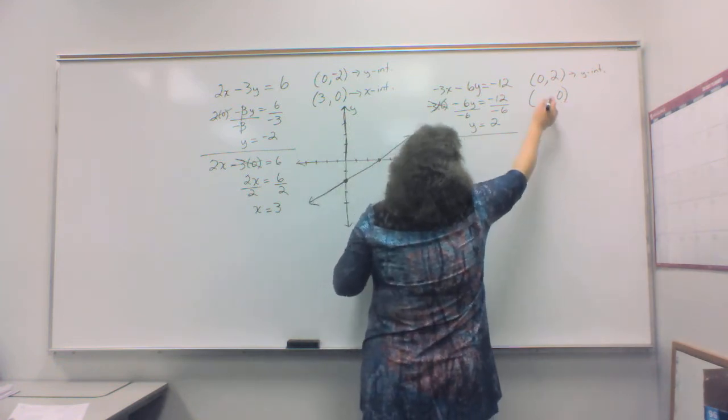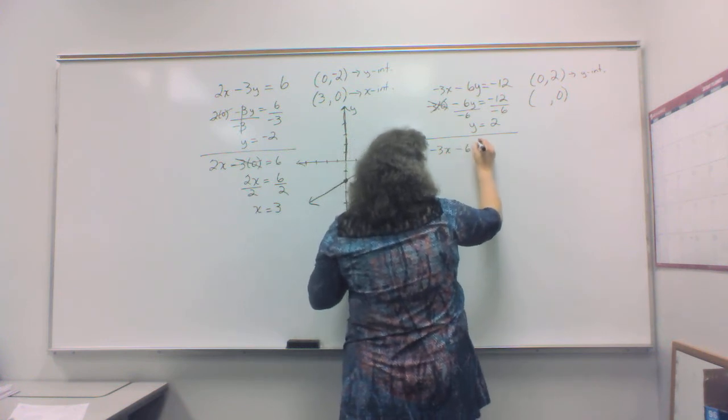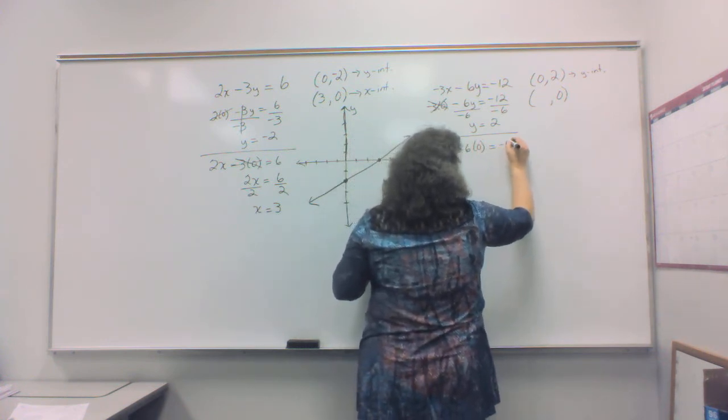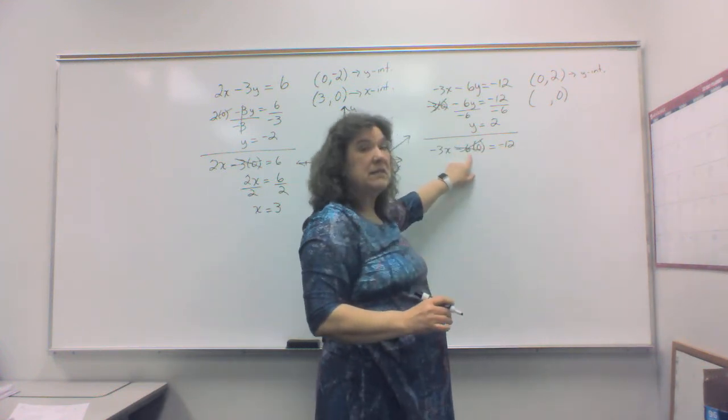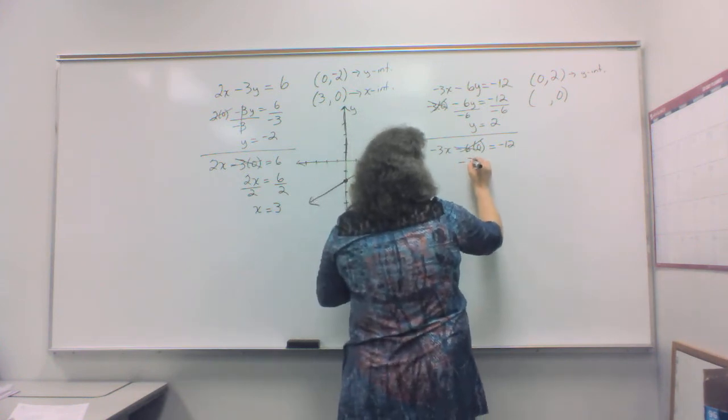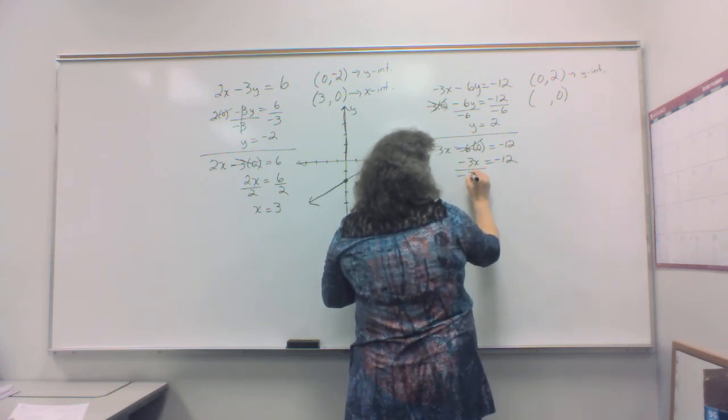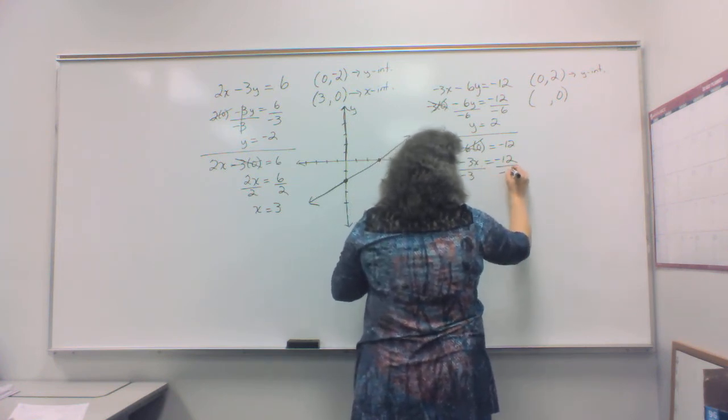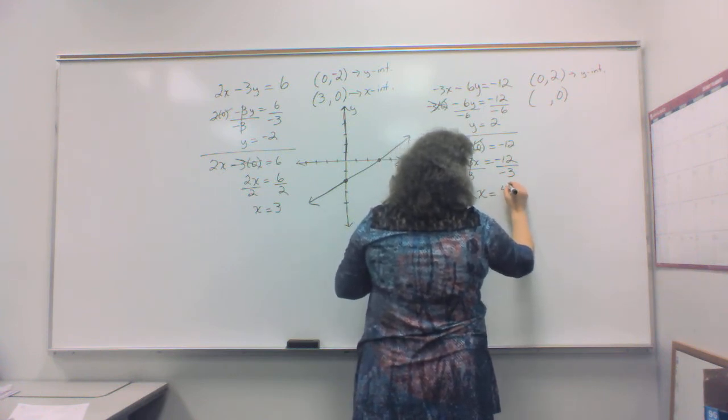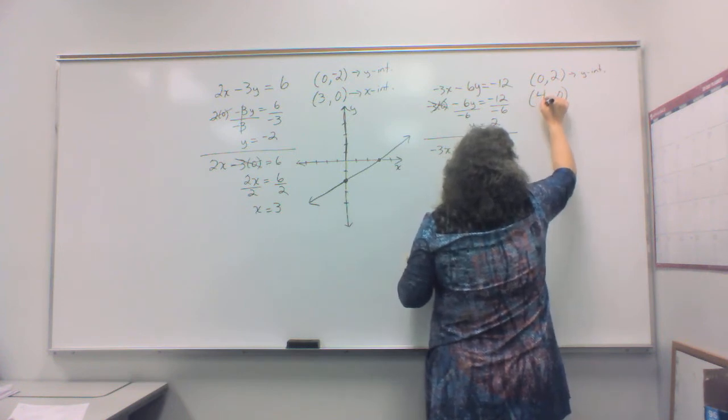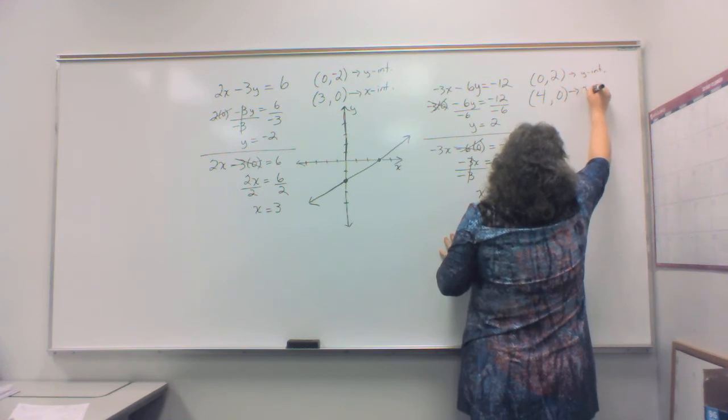Now I'm going to put zero in for the y value. Negative 3x minus 6 times zero equals negative 12. That becomes zero. So I have negative 3x minus zero, which simply leaves me with a negative 3x equals a negative 12. Now undo the multiplication there by dividing by a negative 3. And I'm left with x is equal to the number 4. So my 4, 0 then is my x intercept.